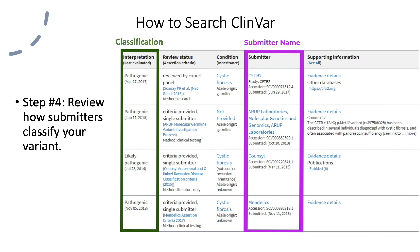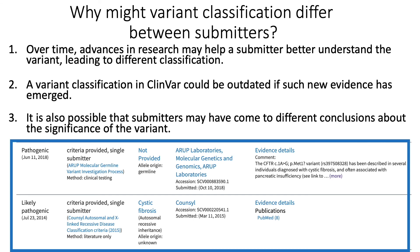If you scroll down the page, you'll reach a section titled Submitted Interpretations and Evidence. This section contains a table with different submitters and their classifications of the variant. It is possible to find that variant classification may differ between submitters — this is not uncommon. It could be because advances in research may help a submitter better understand the variant over time, leading to different classifications. If such new evidence has emerged, a variant classification in ClinVar could be outdated. It is also possible that submitters may have come to different conclusions about the significance of the variant.